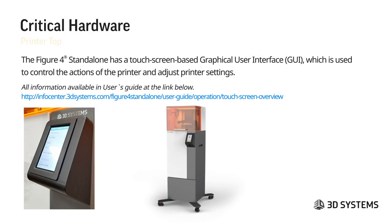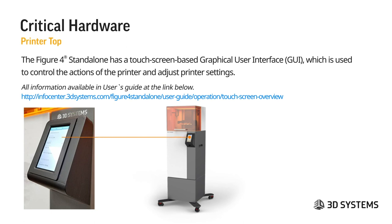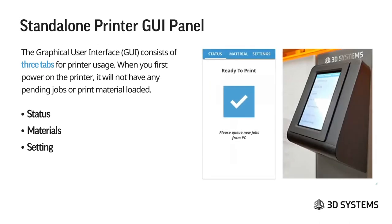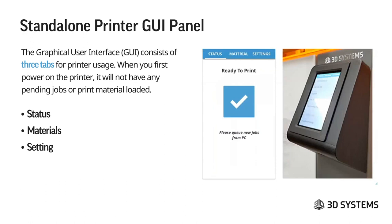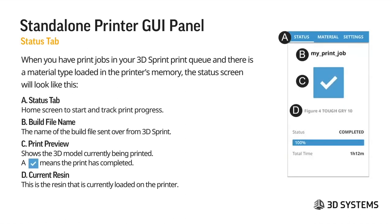We're going to look at the GUI for the standalone printer at a high level. The GUI is on the panel on the front of the system — a small touch screen panel. On the standalone system your default screen has three tabs: the status tab, the material tab, and the settings tab.